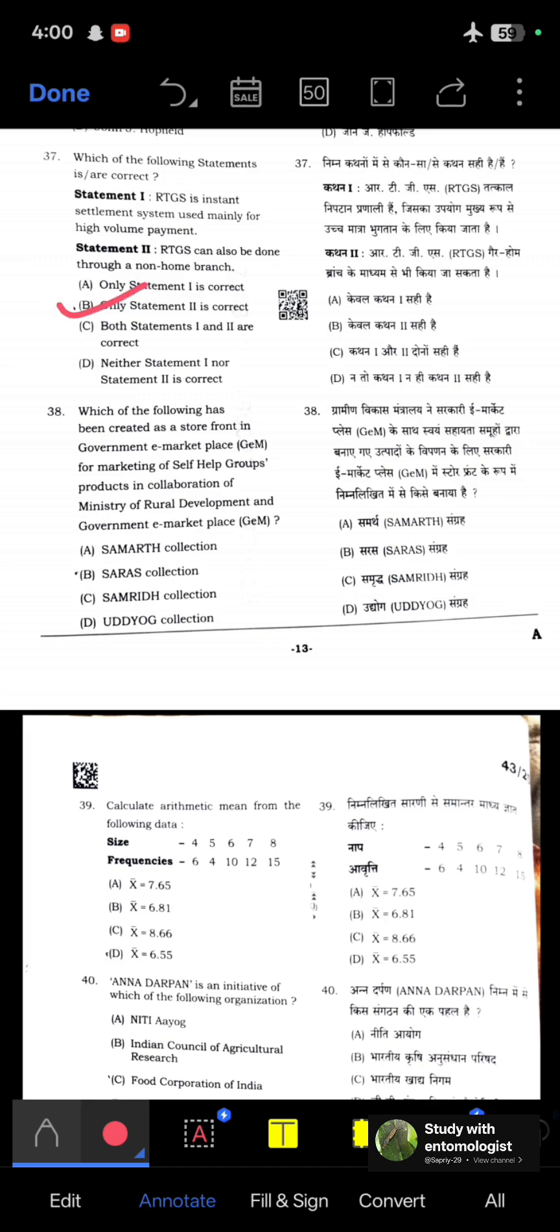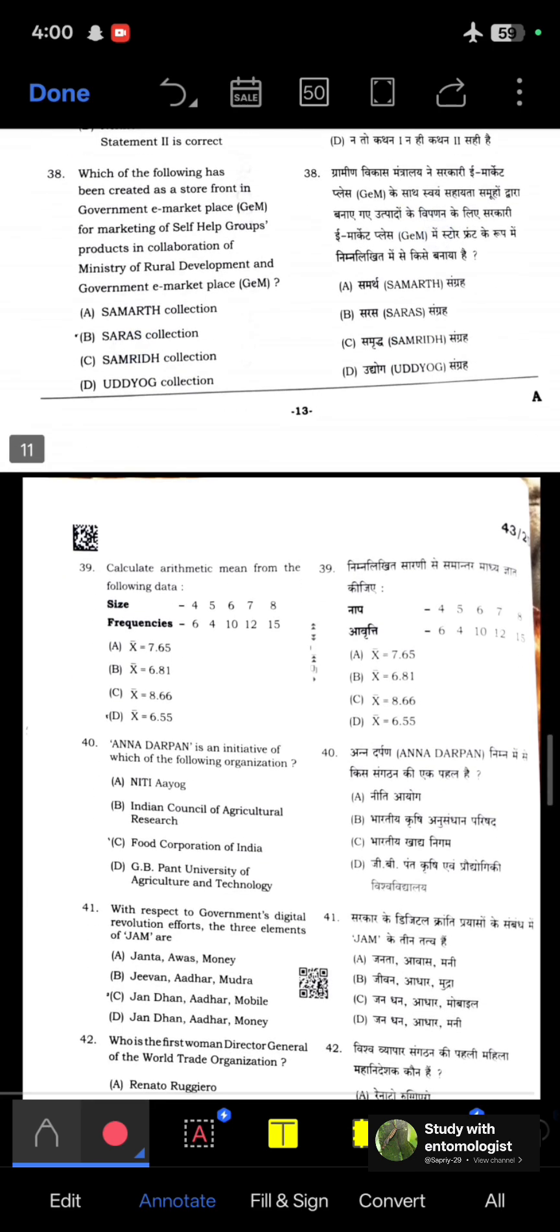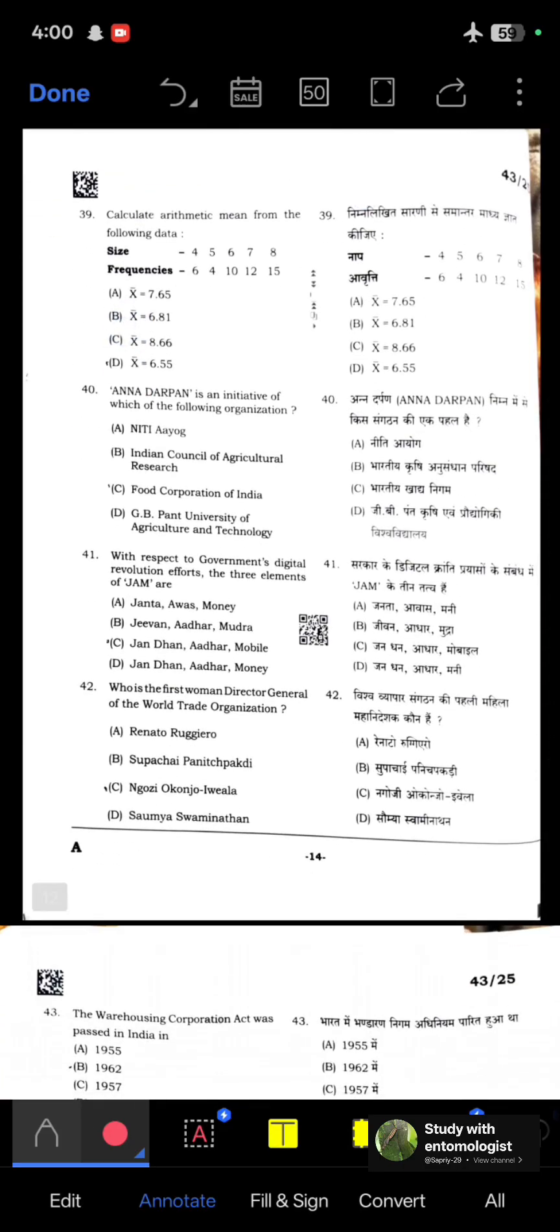Which has been created as a storefront in Government e-Marketplace, GeM, for marketing of SHG products in collaboration with Ministry of Rural Development? That collection name is Saras Collection. Calculate arithmetic mean from the following data: sizes 4, 5, 6, 7, 8 with frequencies 6, 4, 10, 12, 15. By calculating, the arithmetic mean is 6.55.